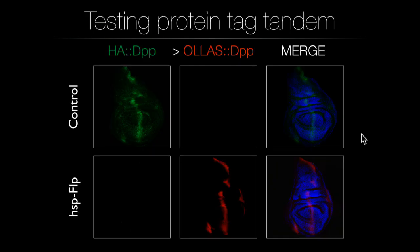With this model, we first have to test that it works. As you can see in the pictures, in the control when Flp recombinase is not active, only the first copy of the tandem is produced. Whenever we activate Flp recombinase — in this case with a heat shock promoter — the first copy disappears and only the second one is produced.